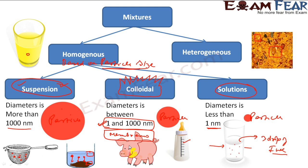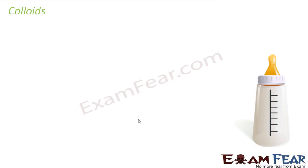Colloids also show Brownian movement, which we will talk about, and they can be separated using membranes because the particle sizes are in this range. With this background, let's start our chapter on colloids.